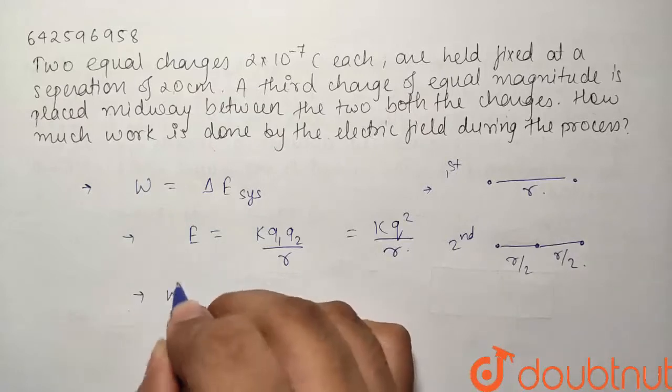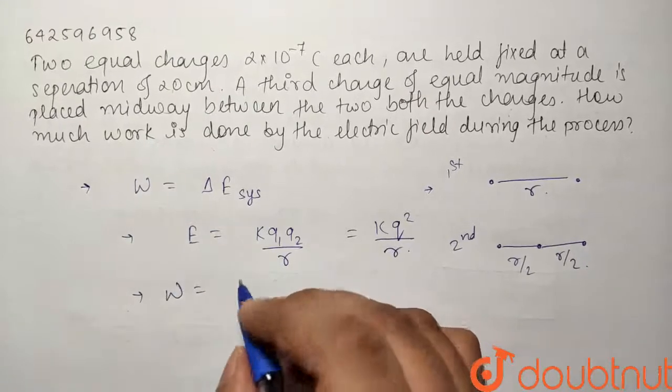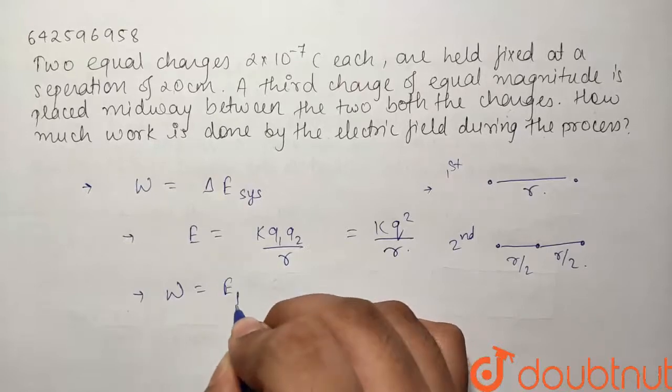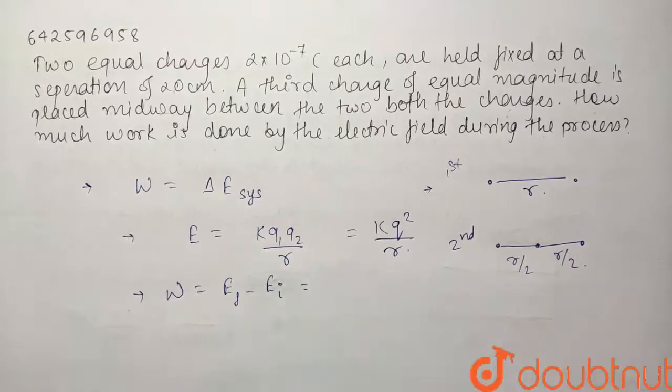So if I want to find out the work done, I'll just find out the change in energy, that is E_final minus E_initial. So E_final is what?